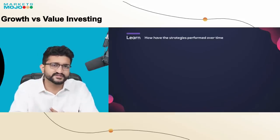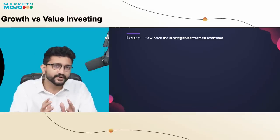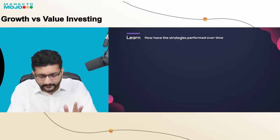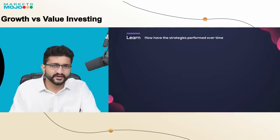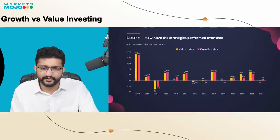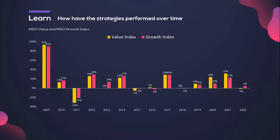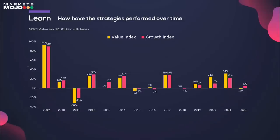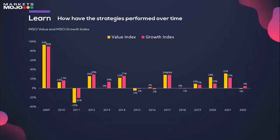Let's try to understand how these strategies have performed over time — is there any strategy clearly taking the lead? I've gone to the MSCI Growth Index and the MSCI Value Index and plotted them over the last 14 yearly periods. The one in yellow is the value index, the one in red is the growth index. For example, in 2009 the value index moved up by 93% and the growth index by 90%. Across the different yearly periods, there's not a major difference between the outperformance of one over the other in any particular year.